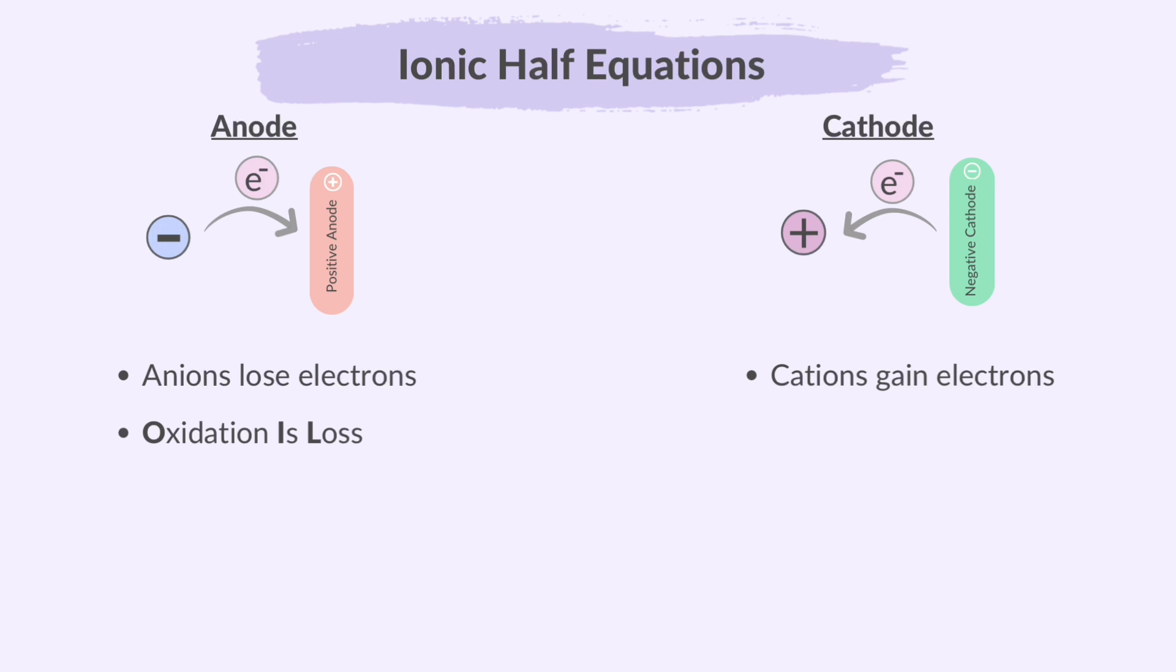An easy way to remember this is the mnemonic OILRIG. Oxidation is loss of electrons. And reduction is gain of electrons. We use ionic half equations to show these processes, making sure the charges are balanced.